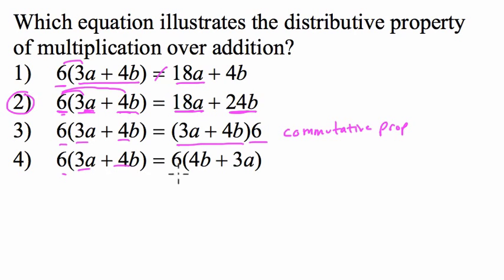And here, we're also using the commutative property. We're changing the order of these two terms. 3a plus 4b is becoming 4b plus 3a. These are both examples of the commutative property, but here they're interested in the distributive property. Thanks.